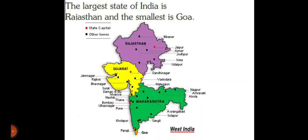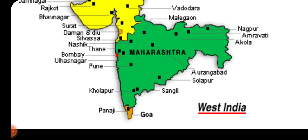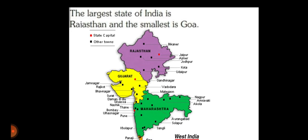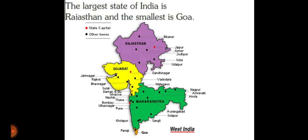The largest state of India is Rajasthan and the smallest is Goa. You can see the purple color — Rajasthan is the largest state of India. Goa, shown in darker yellow color, is the smallest state of India. Largest state: Rajasthan. Smallest state: Goa. That's all for today. Thank you so much.